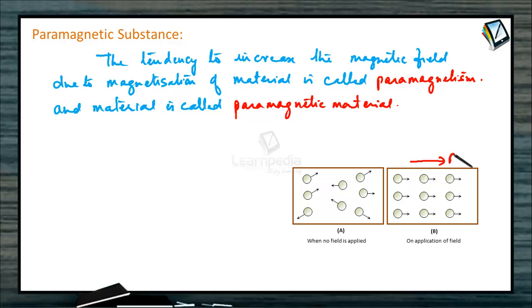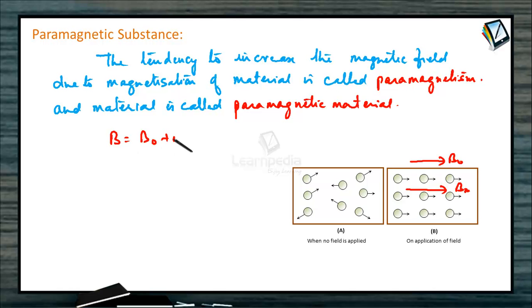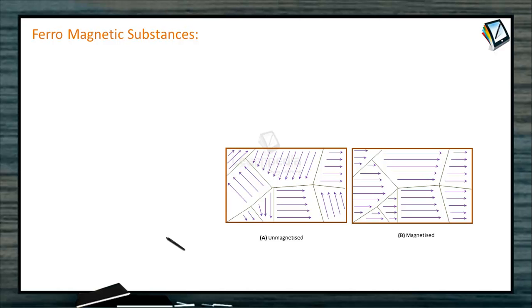So here the magnetic field is B0, the induced magnetic field is BM, and the total magnetic field B is equal to B0 plus BM. Now we will study ferromagnetic substances.